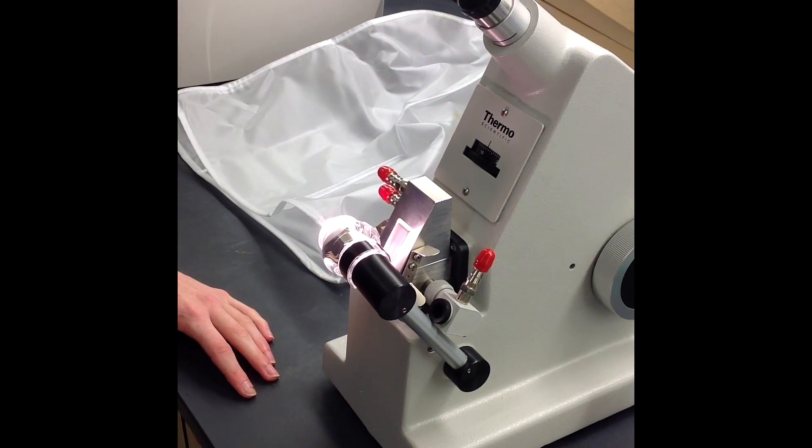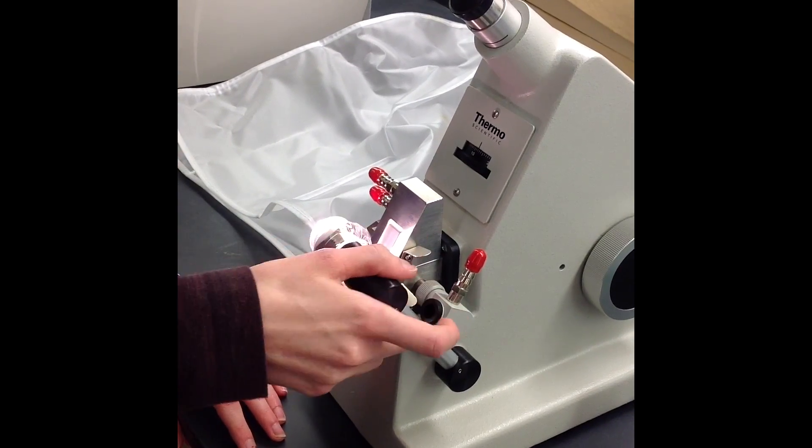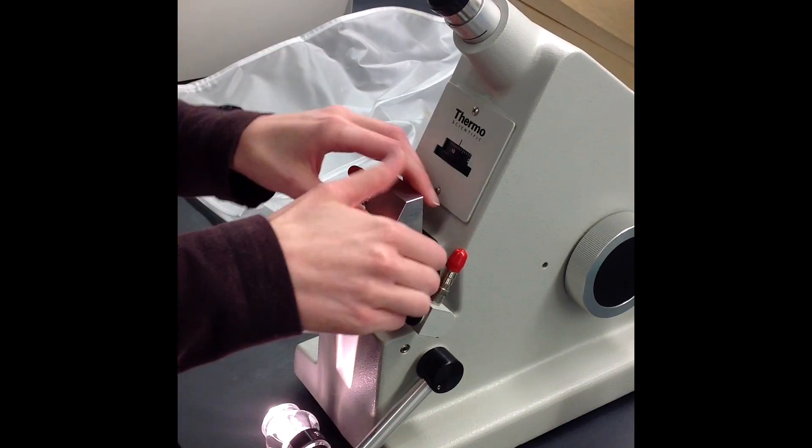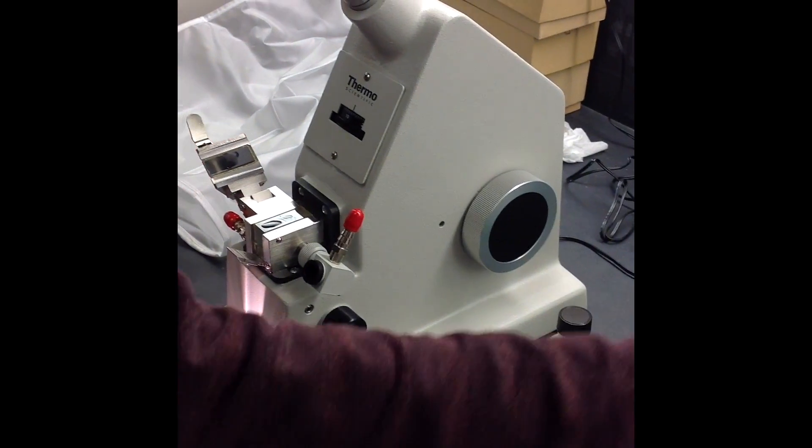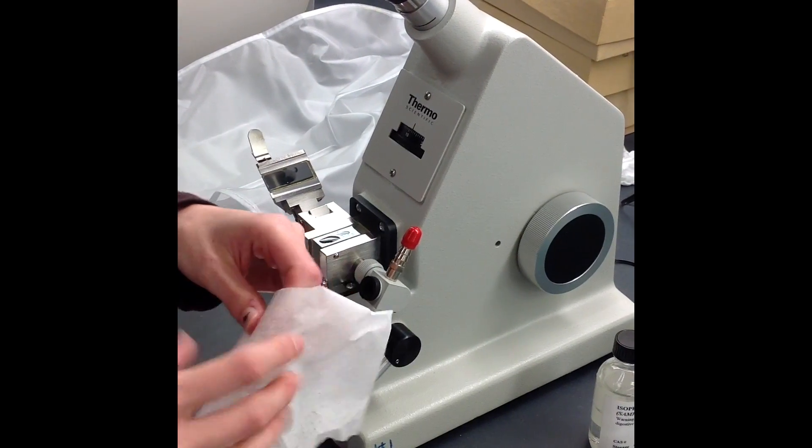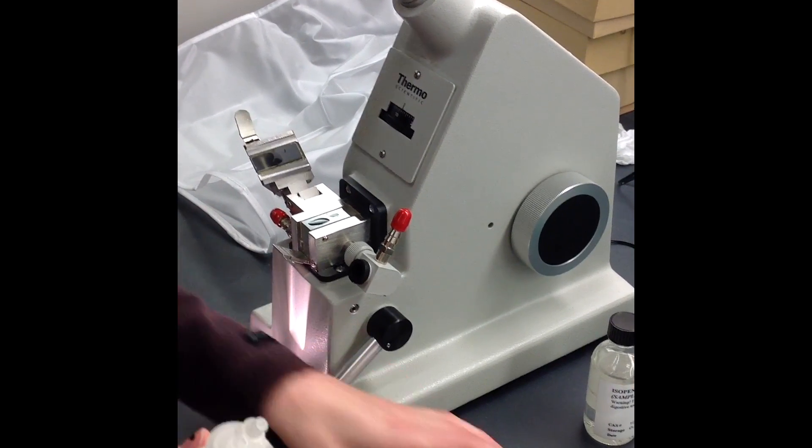Now that you've taken your reading, it's time to clean off the prism. I'm going to lower the lamp, flip this open, take a chem wipe, and add the denatured ethyl alcohol - just a couple drops.